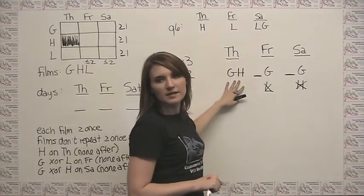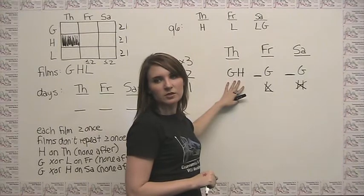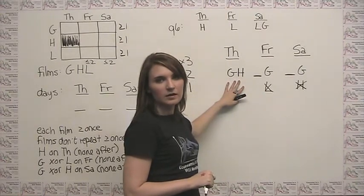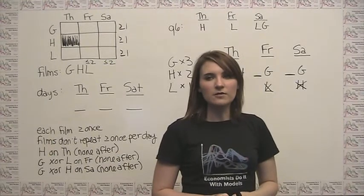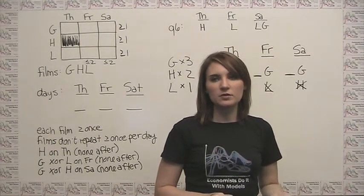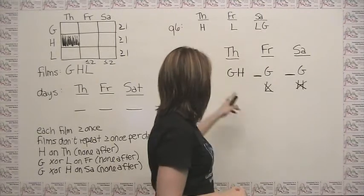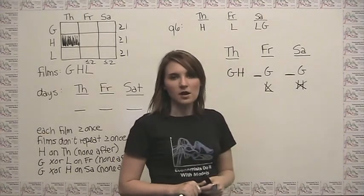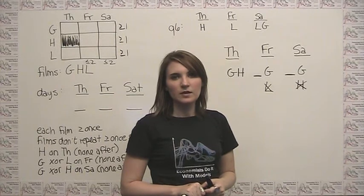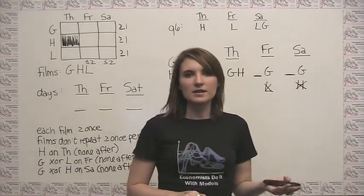Choice C says limelight and harvest are both shown on Thursday. Choice C is interesting, because if limelight and harvest have to both be shown on Thursday, then it has to be true that all three are shown on Thursday.